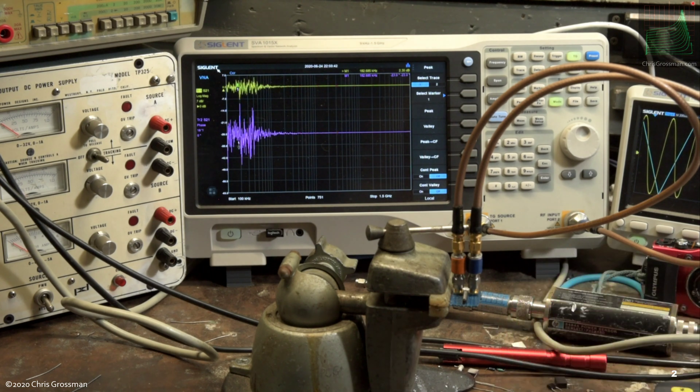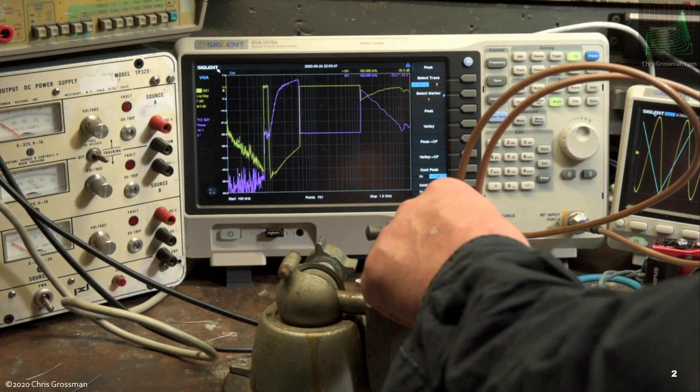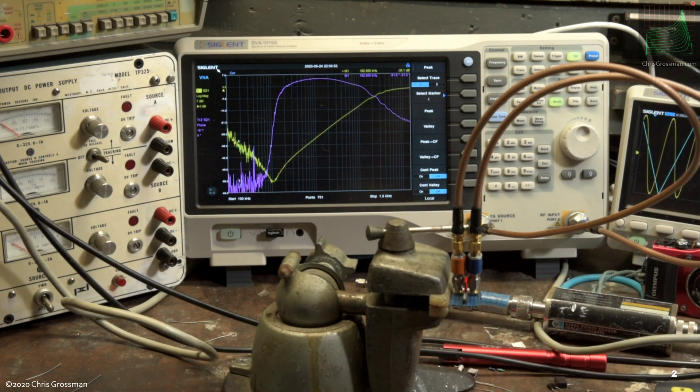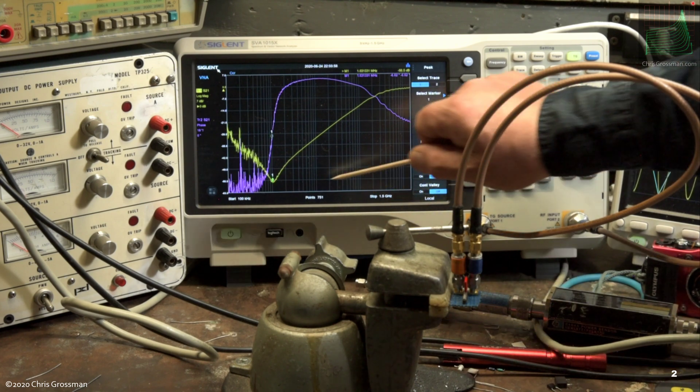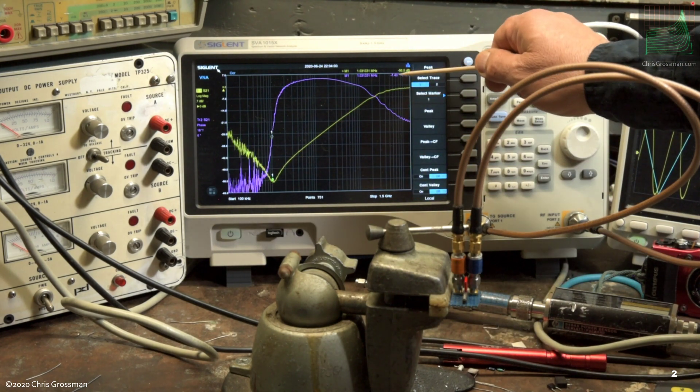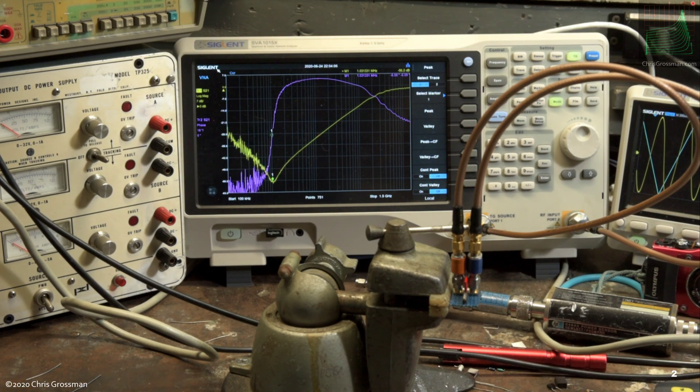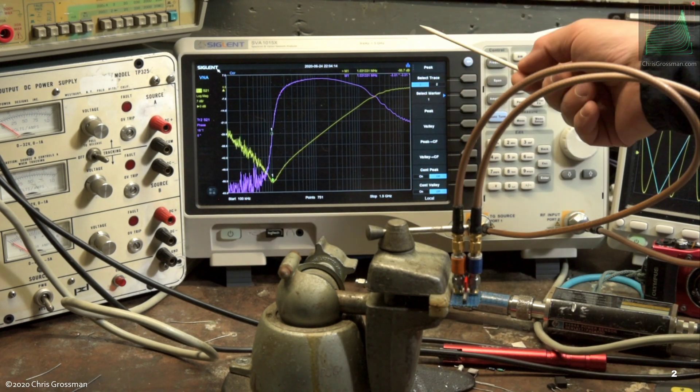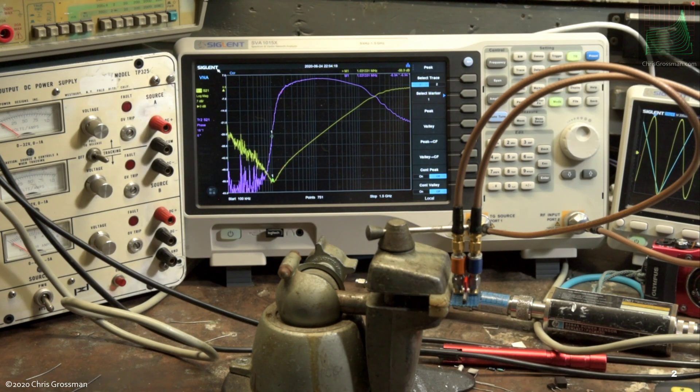So let's take a 2.2 microfarad capacitor and I'll plug it in. You can see this valley here. I could use the valley function on the marker. We'll go right to the valley and the marker will tell me the depth of this valley, and the depth of that valley is related to the ESR, and I'll explain that later. It gives me where that valley is, which is essentially the capacitor resonance. Now this capacitor is resonating at almost exactly 1 megahertz.